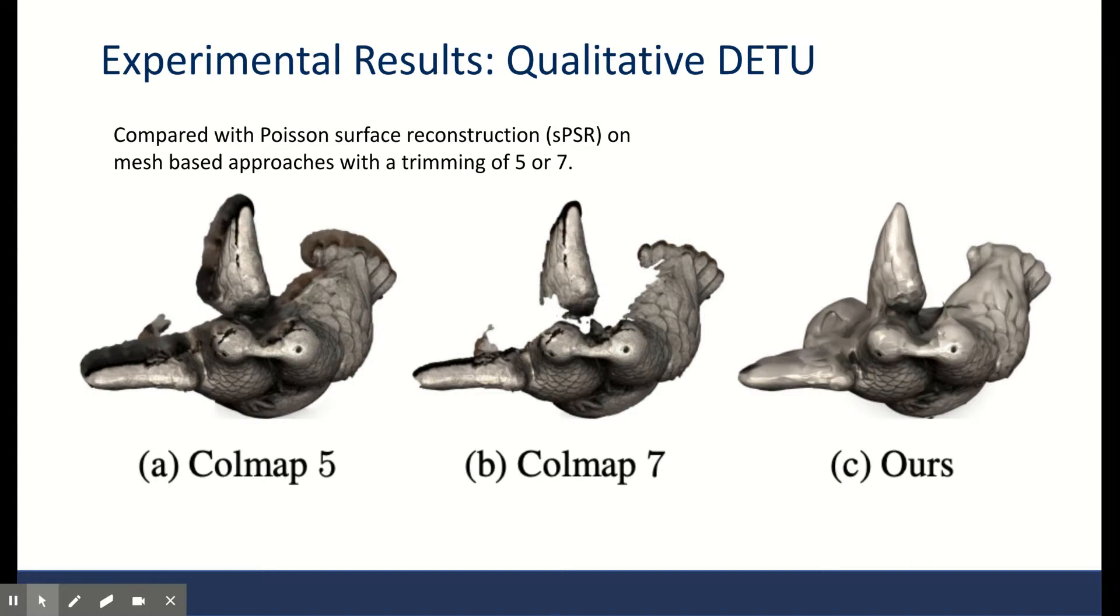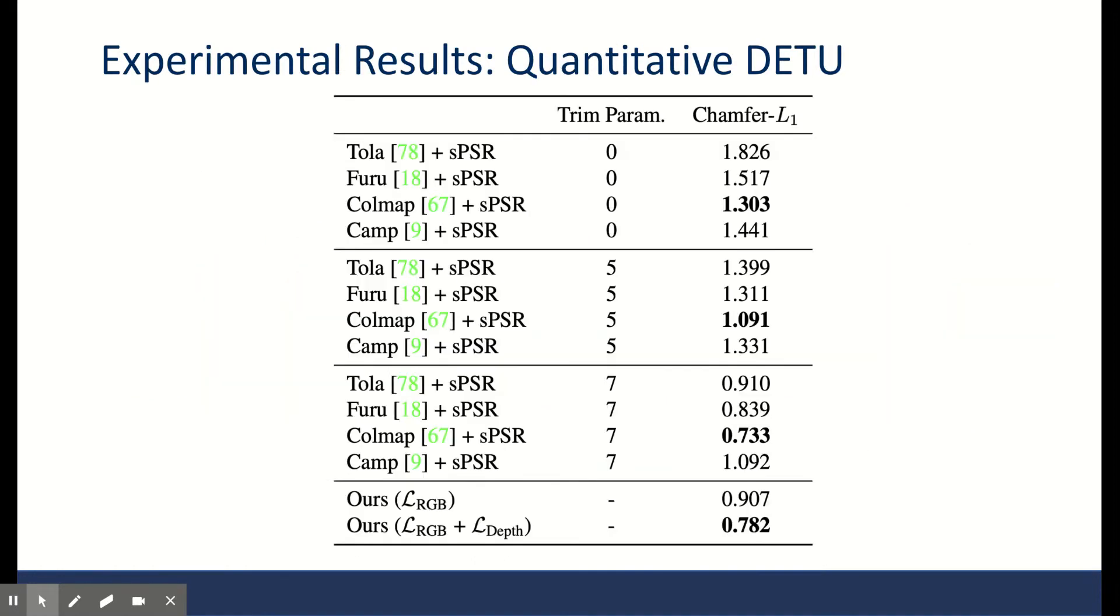This trimming threshold is tricky. As you can see, a larger trimming of 7 is visually worse, but if you look at the numbers, a trimming of 7 gives you the best chamfer distance for the mesh-based methods. And their method, based on implicit function, is comparable to the trimmings of 7 and better than the other lower trimmings.